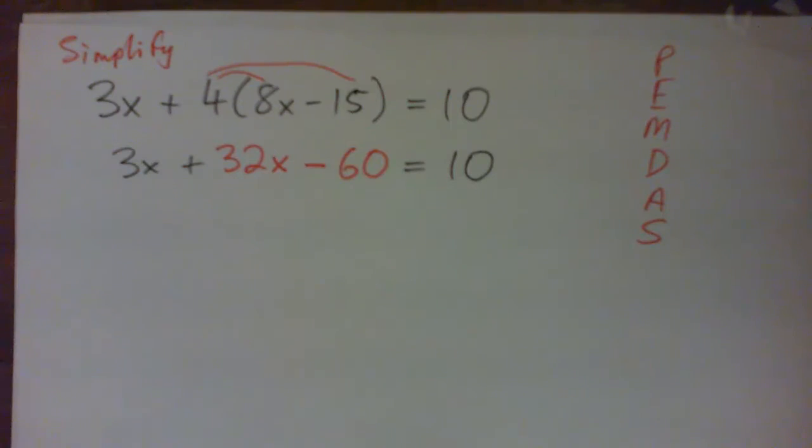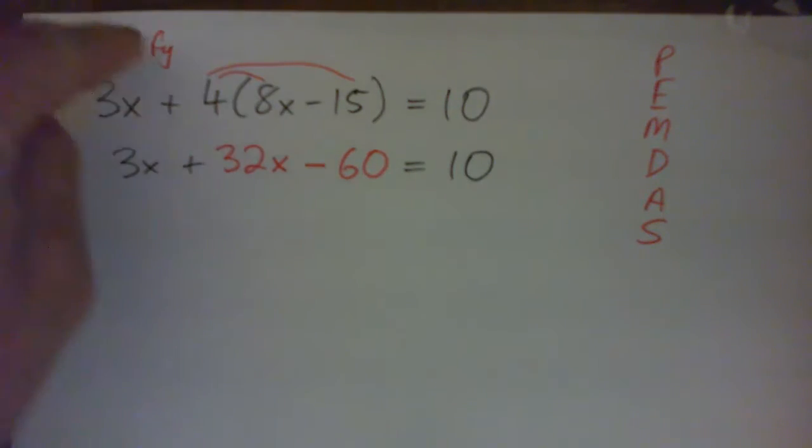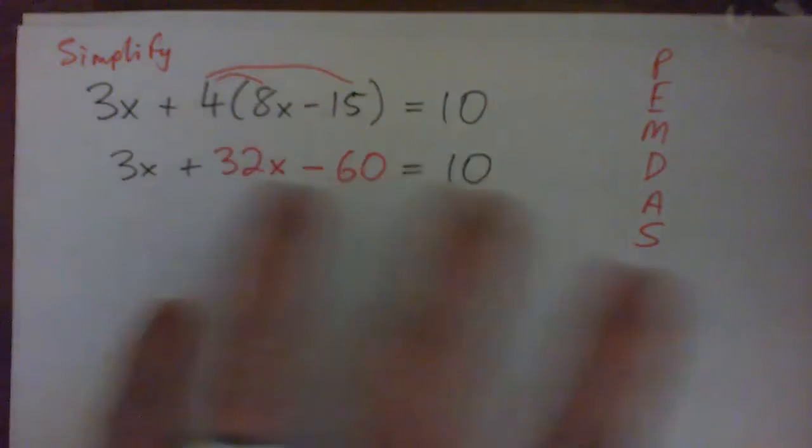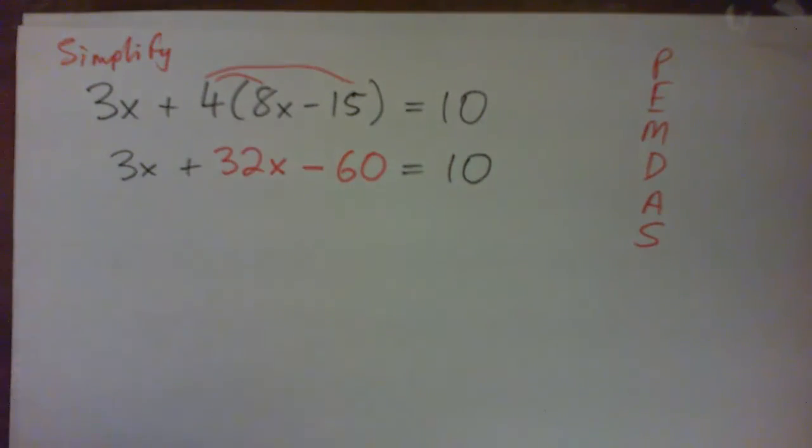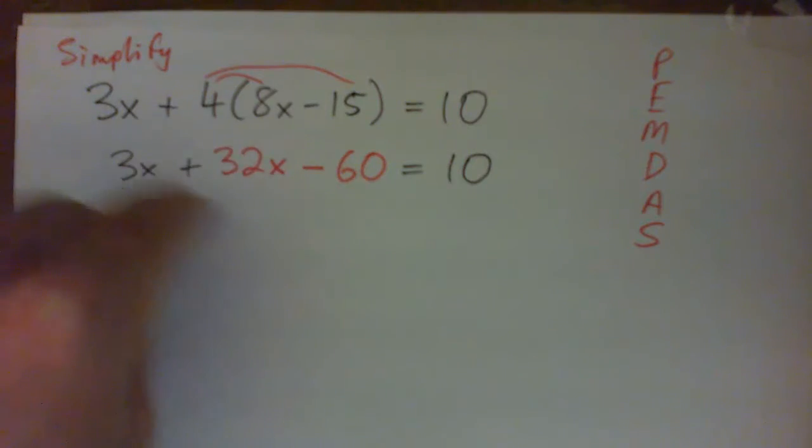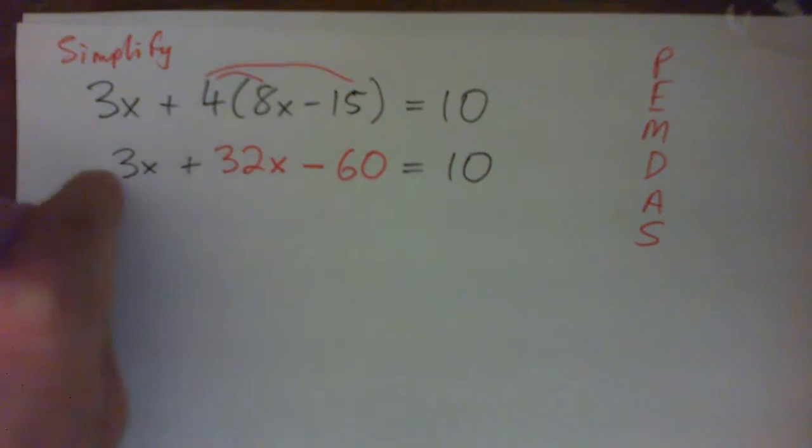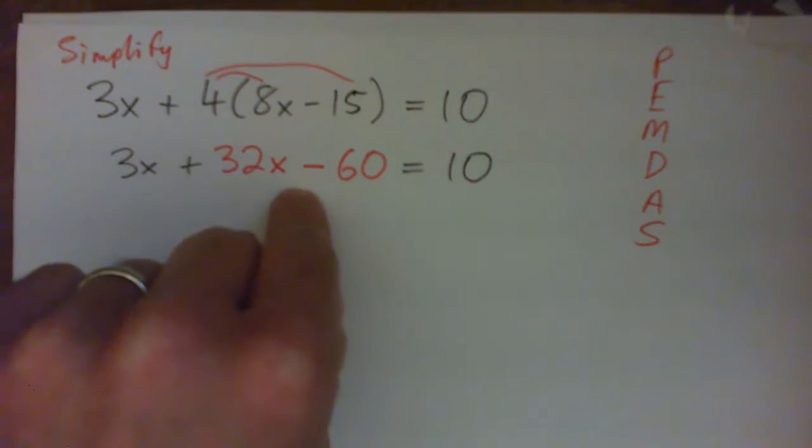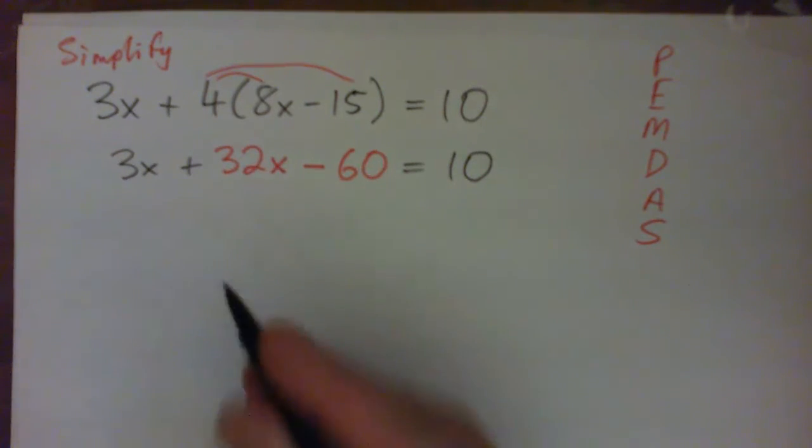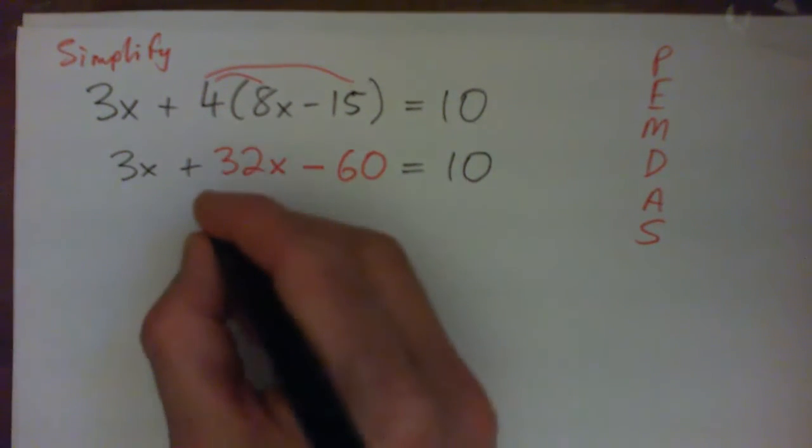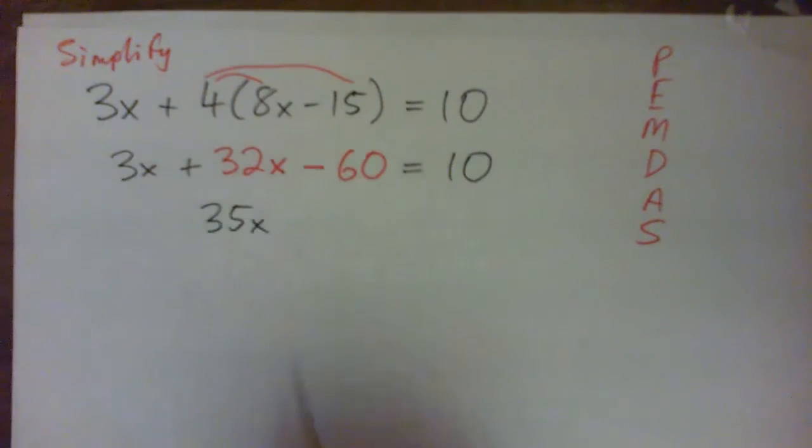So the next step is, we still have to simplify the left, because we can't. So in other words, when you're solving equations, you keep simplifying until you can't simplify anymore. And we can continue to simplify here, because we have like terms. Right? So go ahead and add those like terms together, and write down what you get. So 3x plus 32x, did we get 35x?